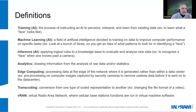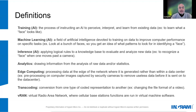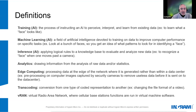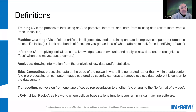Inference in AI is applying logical rules to a knowledge base to evaluate and analyze new data — for example, to recognize a face when it moves past a camera. Analytics is drawing information from the analysis of raw data and/or statistics. Edge computing is processing data at the edge of the network where it's generated rather than at a data center — for example, preprocessing images captured by security cameras to remove useless data before it's sent to the data center for storage or processing.